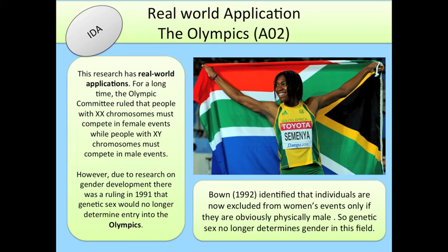This research has real-world applications. For a long time, the Olympic Committee ruled that people with XX chromosomes must compete in female events, while people with XY chromosomes must compete in male events. However, due to research on gender development, there was a ruling in 1991 that genetic sex would no longer determine entry into the Olympics.